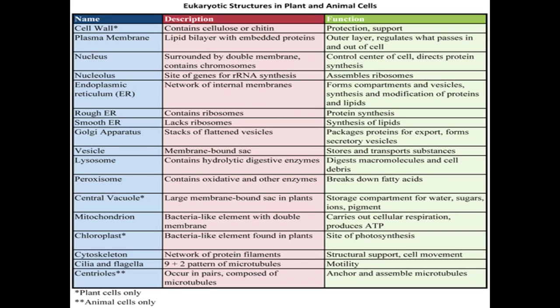The plasma membrane is a lipid bilayer with embedded proteins; the outer layer regulates what passes in and out of the cell. The nucleus is surrounded by a double membrane, contains chromosomes, and is basically the control center of the cell, directing protein synthesis. The nucleolus is within the nucleus; it's the site of genes for rRNA synthesis and it assembles the ribosomes.